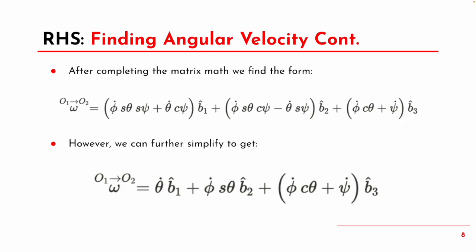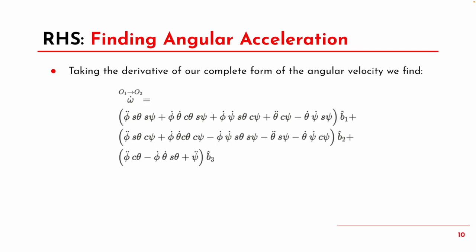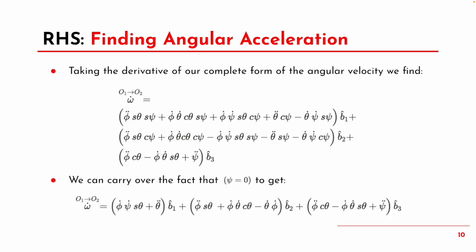Next, we want to find the angular acceleration in the body frame. We can take the first time derivative of angular velocity to get the following form. Similar to before, we assume psi equals zero to simplify further. Now we have a definition for angular acceleration in the body frame, as well as angular velocity in the body frame, but we're still missing the principal mass moments of inertia to fully define the right-hand side of our Euler equations.